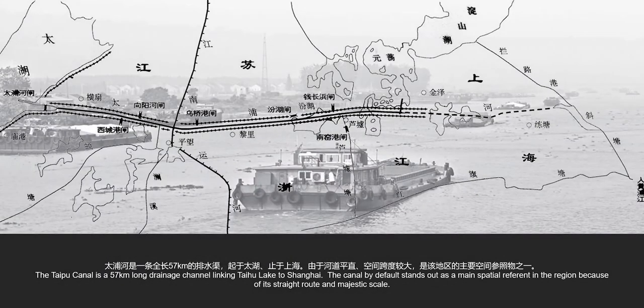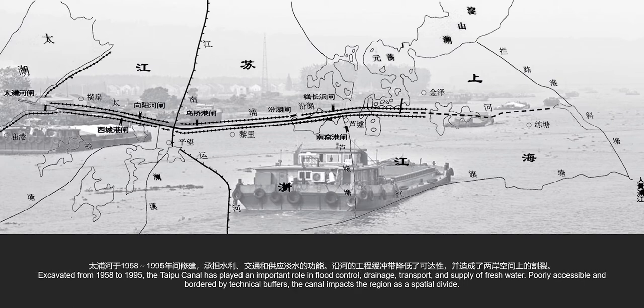Taipu Canal is a 57 km long drainage canal linking Taipu Lake to Shanghai. The canal by default stands out as a main spatial reference in the region because of its straight road and majestic scale. Excavated from 1958 to 1995, the Taipu Canal has played an important role in flood control, drainage, transport, and supply for fresh water.